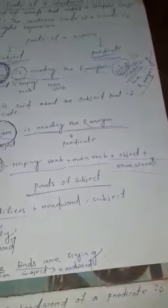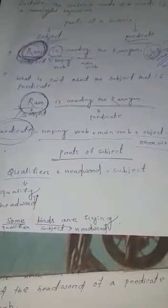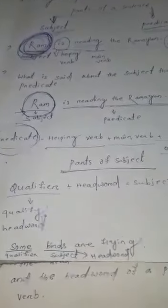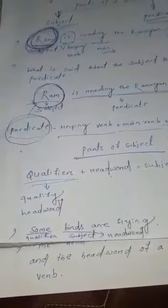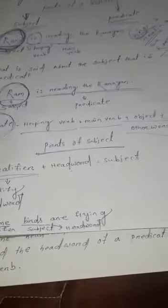If you have any queries in finding the subject or predicate in the sentence, please ask me. Now let me tell you about parts of the subject. There are two most important parts: subject and predicate. But now I will tell you the parts of the subject. There are two parts of the subject — one is qualifier and the second one is headword. A qualifier plus a headword consists of a subject.